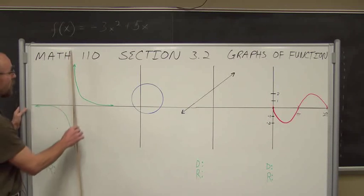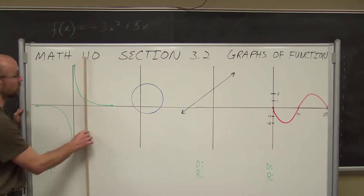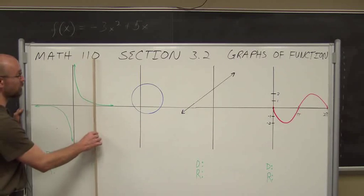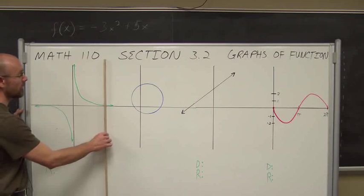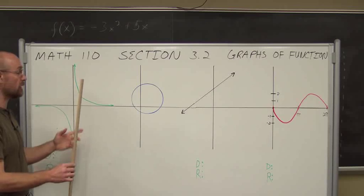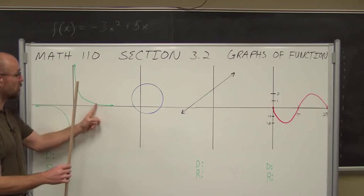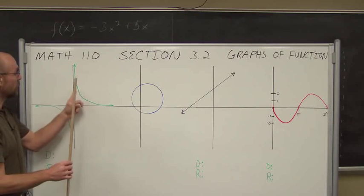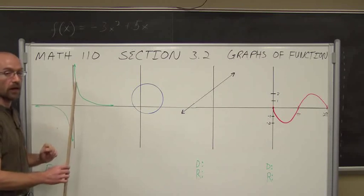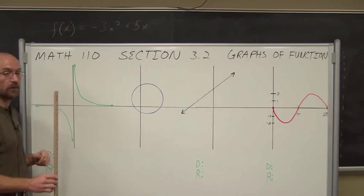Both sides of the graph pass the vertical line test. For each x, it only corresponds to one value of y. So this is, in fact, a function.